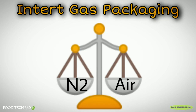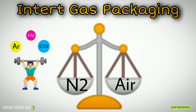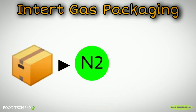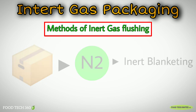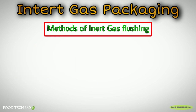Nitrogen has nearly the same weight as air and the others are heavier. If nitrogen is the only gas used in the packaging, then it is called inert blanketing. Now let's see the methods for flushing inert gas into packages.